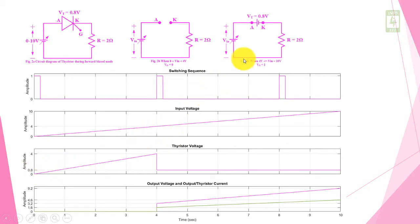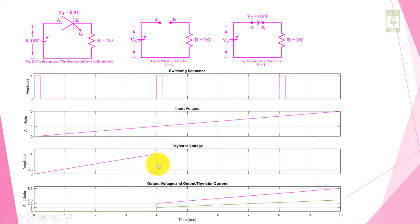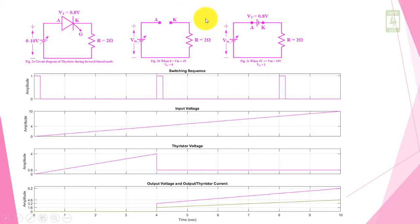For the variation from 4V to 10V the circuit diagram will be this one. For this variation we have applied the gate signal twice — first one and second one. At this first gate signal, at 4 seconds or 4V, the input voltage is greater than the threshold voltage, so this gate signal will turn on the thyristor, and the thyristor will behave like a battery of 0.8V.